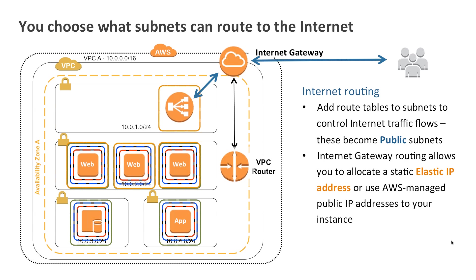For your VPC to route to the internet, you can start to add public IP addresses to your hosts. You can also add static elastic IP addresses to your hosts within those public subnets.